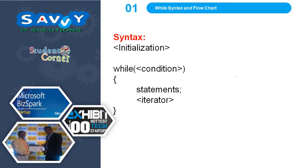Now the first one is while syntax. In the while loop, the first one is the initialization, second is the condition, and next is the iterator. These three are common in all three loops. Remember that initialization, condition, and iterator are common in all three loops.